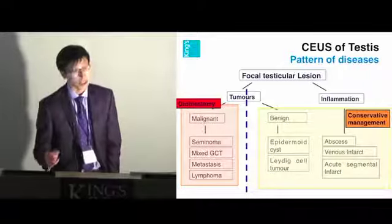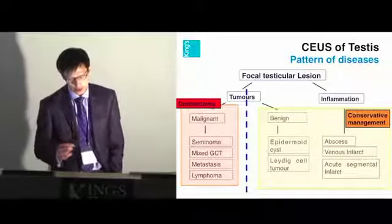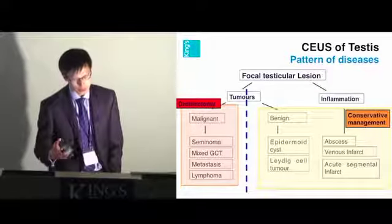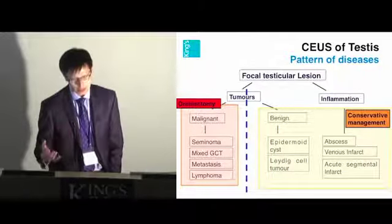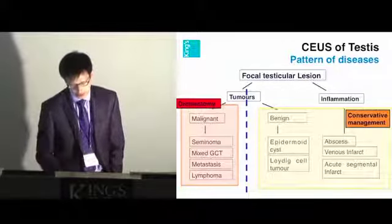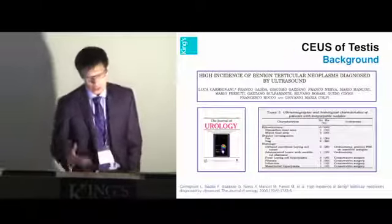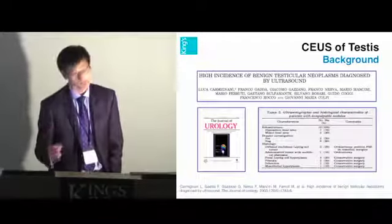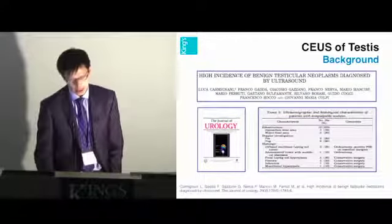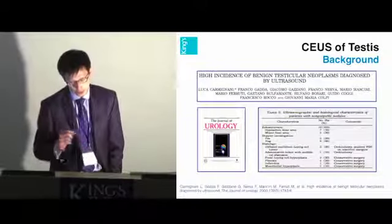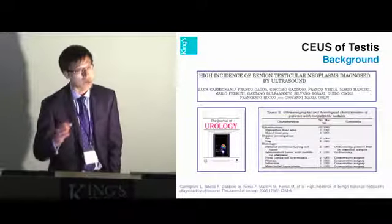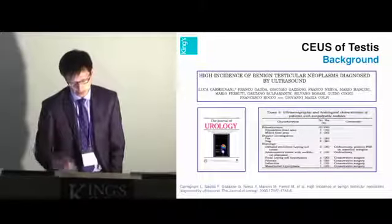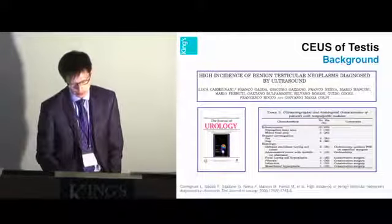The fear of failing to remove a testicular germ cell tumor has historically led to radical orchidectomy with the traditional practice of 'if in doubt, take it out' by surgeons. But it's important to know that the majority of incidentally picked up non-palpable testicular tumors are going to be small and are more likely going to be benign. So how can we, as radiologists, prevent unnecessary orchidectomy?